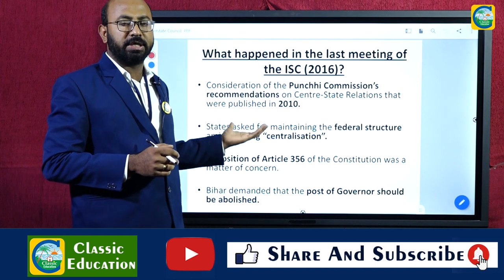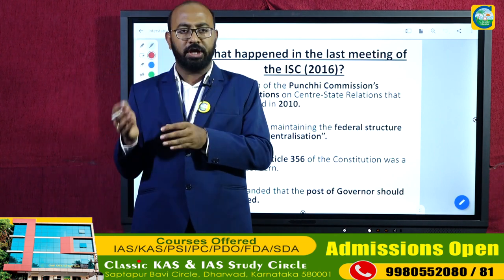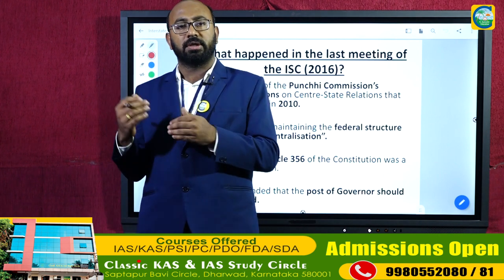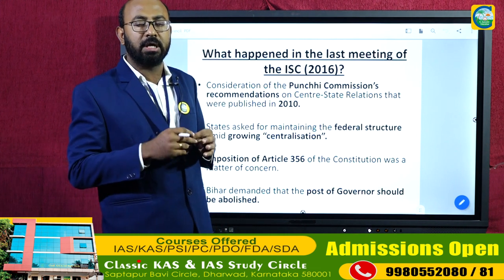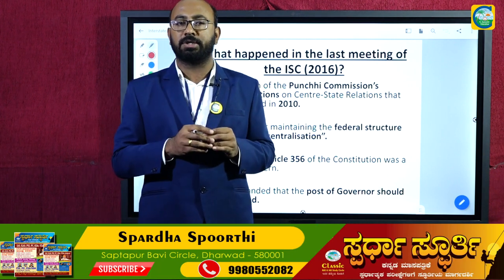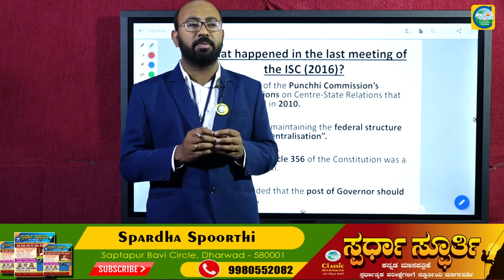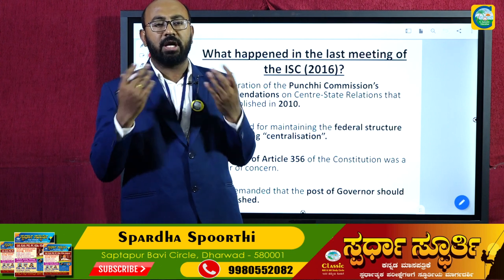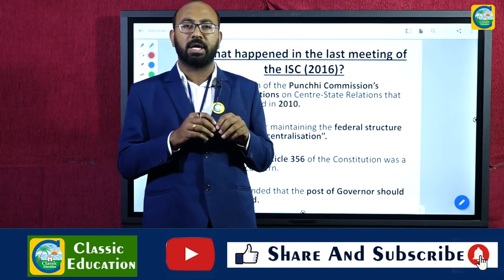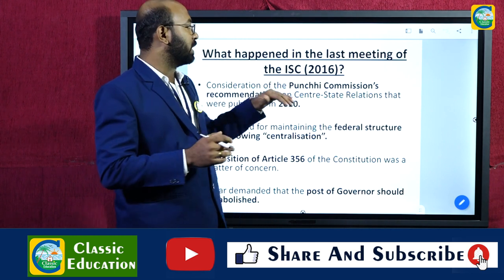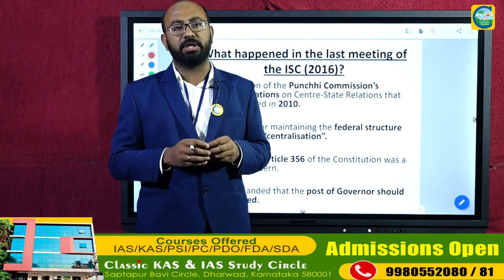The way forward: the central government must implement recommendations of the Administrative Reforms Commission, the Punchhi Commission, the Sarkaria Commission, and the Rajamannar Committee. The Anandpur Sahib Resolution by the Punjab government and other states also contains important recommendations. These must be implemented in their true spirit so that Indian federalism becomes stronger and citizens can truly harvest the benefits of cooperative federalism.